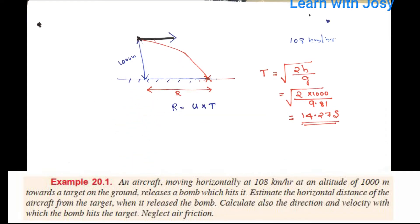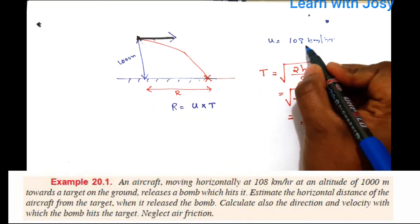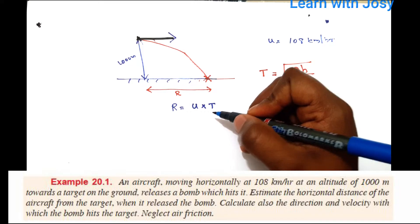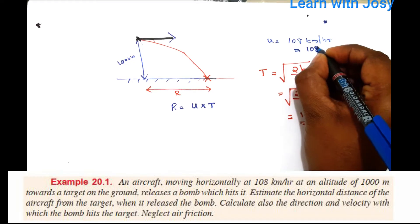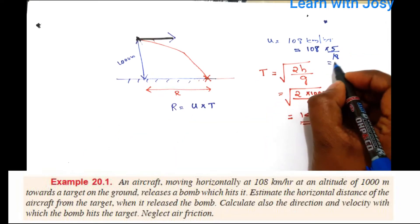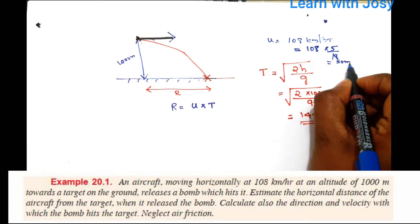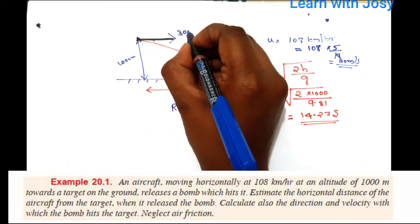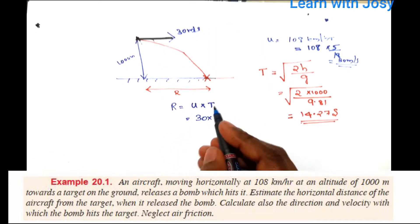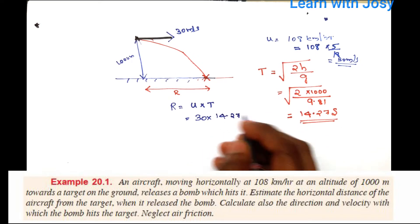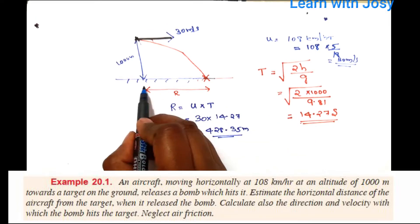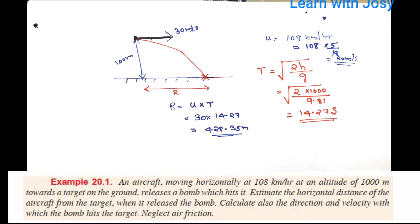The initial horizontal velocity u equals 108 km per hour. We convert this to meters per second by multiplying by 5/18, which gives 30 m/s. Then the range R = 30 × 14.27 ≈ 428.35 meters.